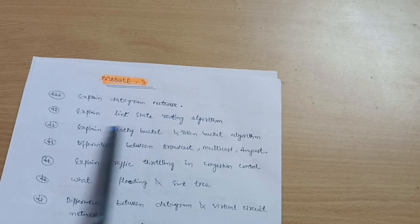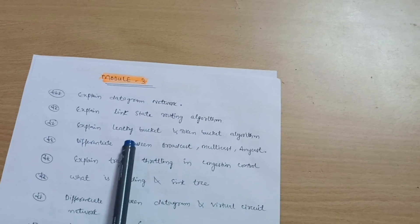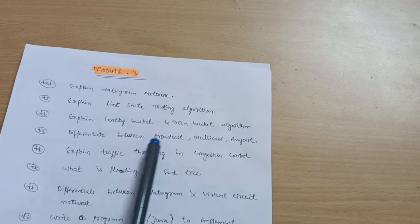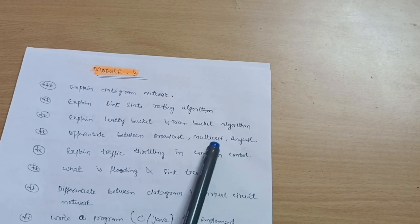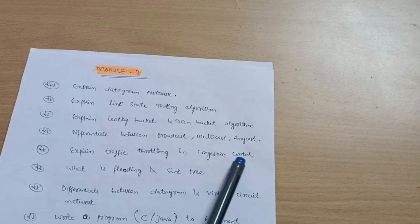Explain leaky bucket and token bucket algorithm - these are rhyming schemes, you should be aware of these. Next is differentiate between broadcast, multicast and anycast. Explain traffic throttling in congestion control.